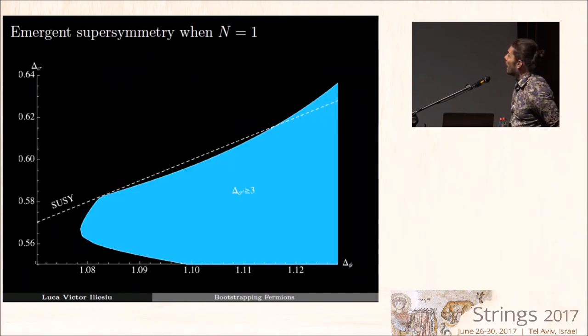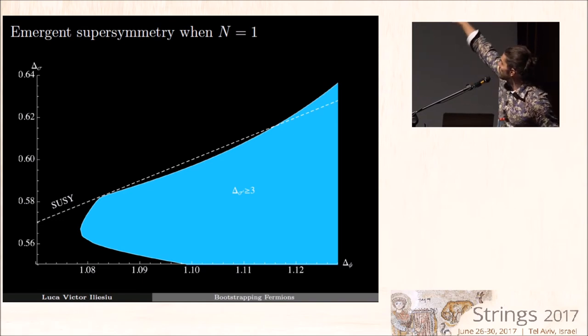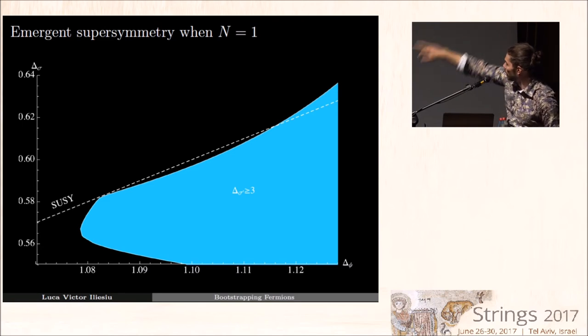Finally, I'd like to discuss the special case of N equals 1, where one cannot impose a global O-N symmetry specifically. People believe that for N equals 1, there's actually an emergent supersymmetry. If that's the case, then there has to be a relationship between the dimension of the fermion and the dimension of the lowest-lying parity-odd scalar. That relation is just given by the line that I show in the figure.